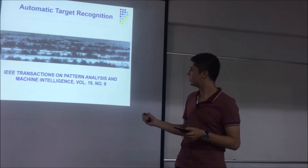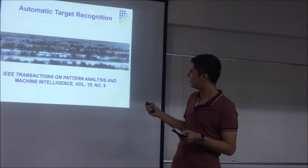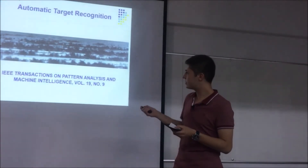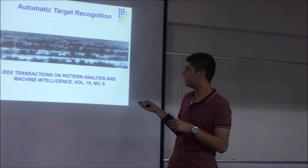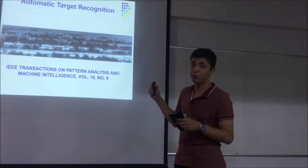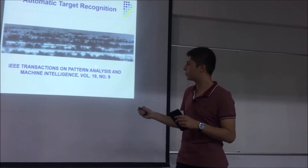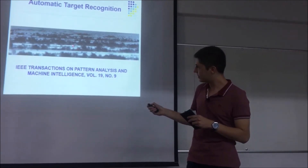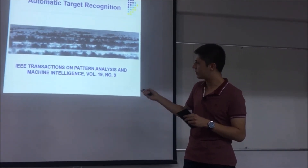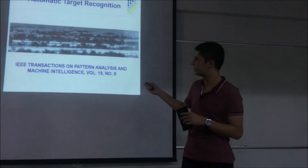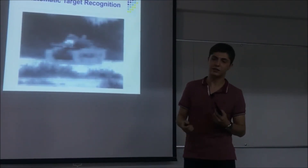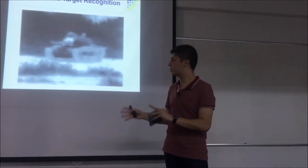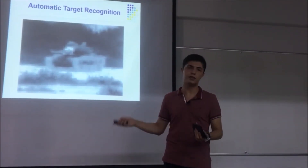Here is another picture. There is something like a rectangle — it is very hard for us to see. This photograph is from IEEE Transactions on Pattern Analysis and Machine Intelligence. In that rectangle, if you look closely, there is a tank. This technology enables soldiers to find their targets very easily.